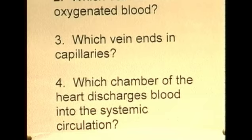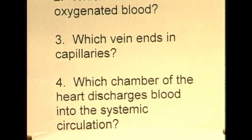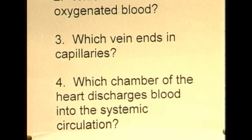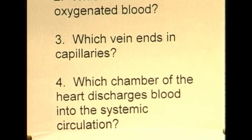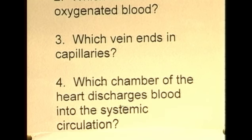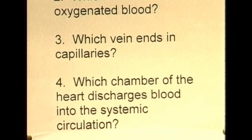Question four: the chamber of the heart discharging blood into the systemic circulation. The systemic circulation is derived from the aorta — the blood vessel which breaks down into all the other arteries that supply the body with blood. The aorta derives from the left ventricle, so it is the left ventricle that discharges blood into the systemic circulation.